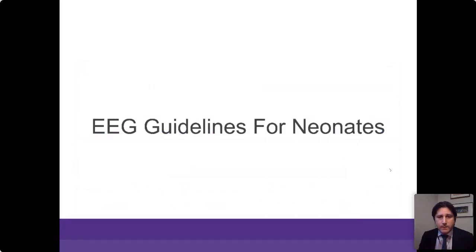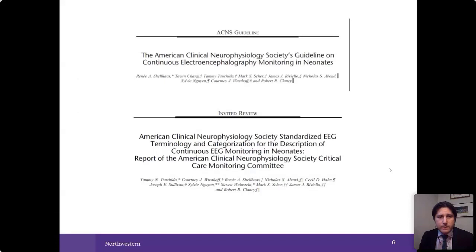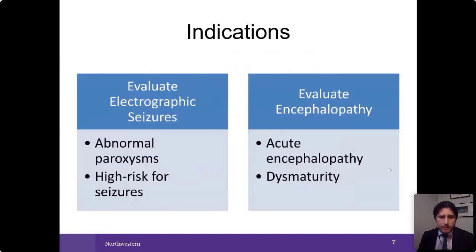The EEG guidelines for neonates were published in 2011 by Dr. Shellhaus and others. There is also standardized EEG terminology with Dr. Dashida as lead author on a paper published a couple of years later. The indications include evaluating for electrographic seizures — either paroxysmal events such as jerking or concern for seizure, or if the patient has a high risk for seizures — and second, to evaluate the severity of encephalopathy, including sudden onset encephalopathy, change in mental status, or subtle changes resulting in dysmaturity.